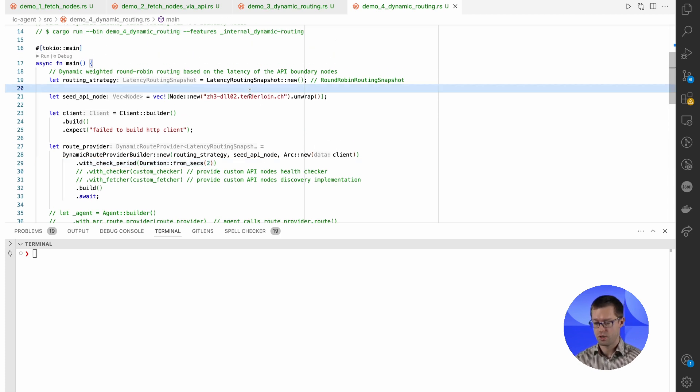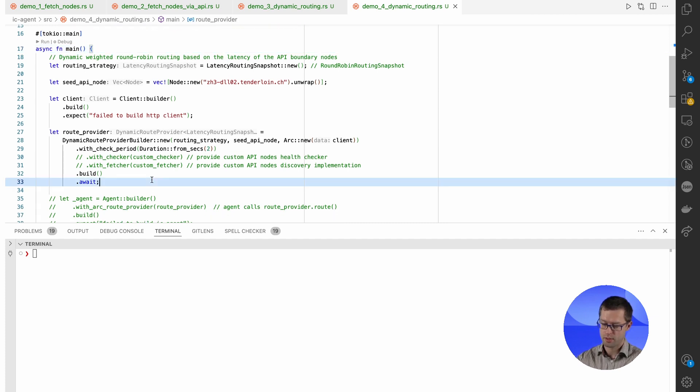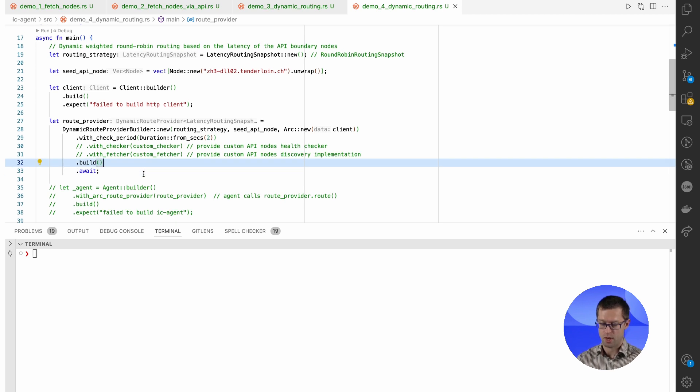Routing strategy can be chosen according to some specific needs. For example, it can be the latency-based routing. In one of the implementations which we provide, we use dynamic weighted round-robin sampling means that nodes which have smaller latencies are preferred. In addition, you can fully customize how often health checks are made and how often the nodes are being rediscovered.